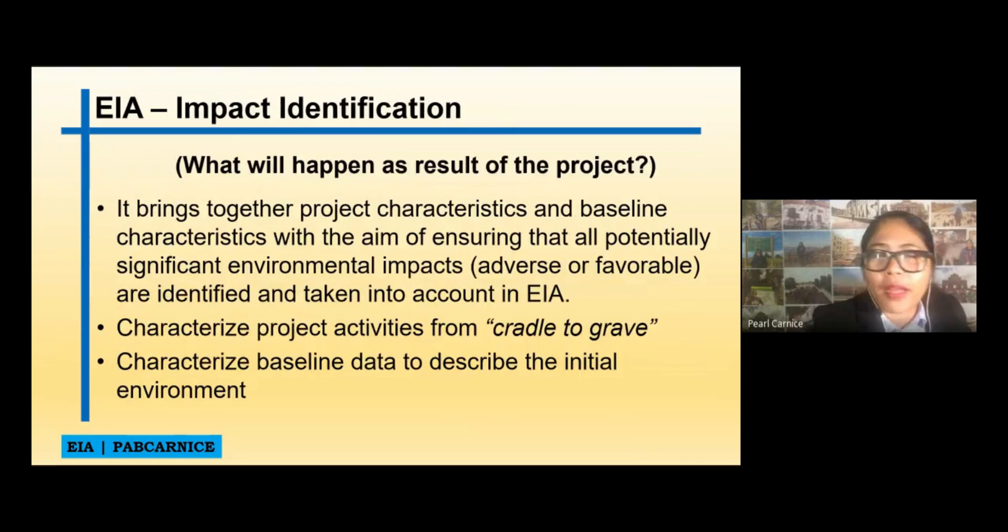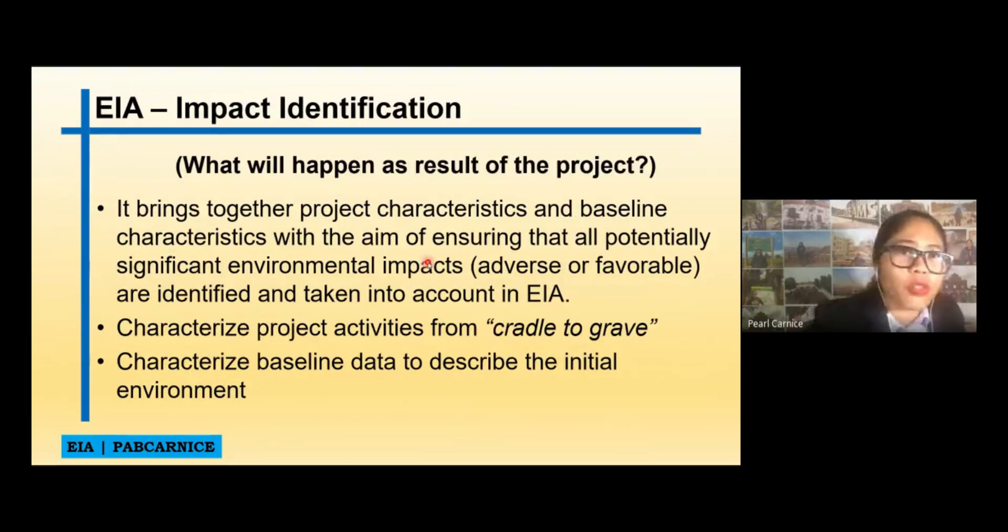So, EIA Impact Identification. What will happen as a result of the project? It brings together project characteristics and baseline characteristics with the aim of ensuring that all potentially significant impacts, may it be adverse or favorable, are identified and taken into account in the EIA.